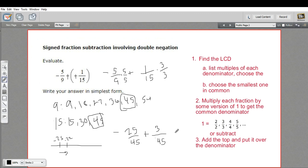So this is negative 22 45ths. And that is our answer. So that is a little bit of work with a signed fraction subtraction problem involving a double negation.